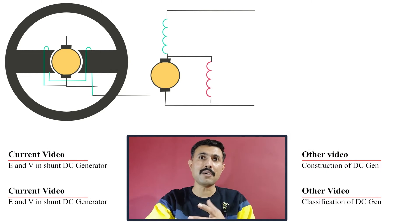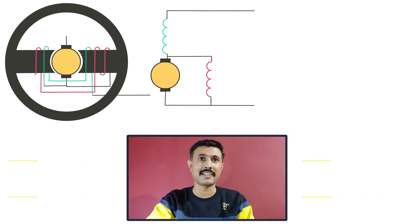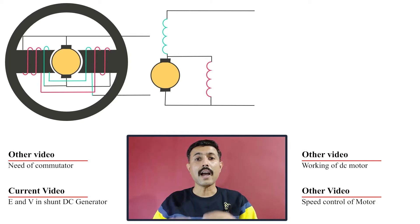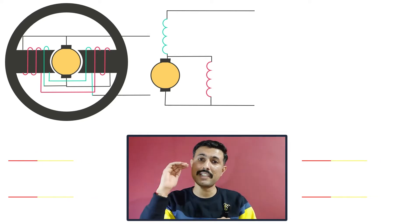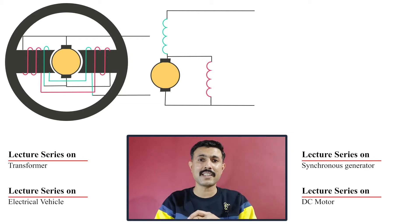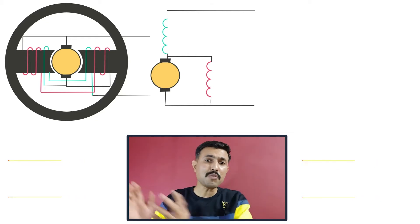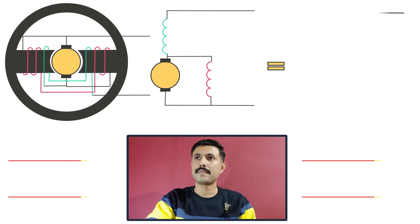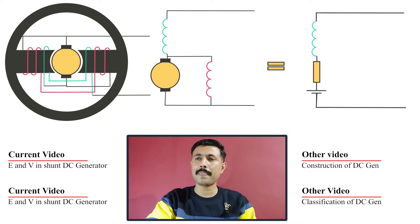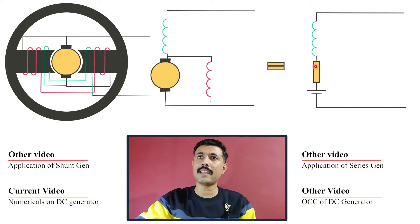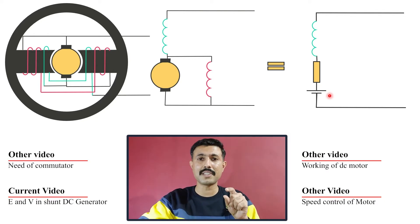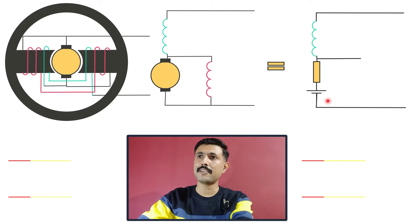This is how the winding arrangement is done in a short shunt DC generator. Our purpose is to get a relation between terminal voltage and induced EMF, and to do this we will use an equivalent circuit of the short shunt DC generator. In the equivalent circuit, the armature winding is replaced with armature resistance and a DC source — this DC source represents the induced EMF in the armature winding. Now let's include the shunt field winding.